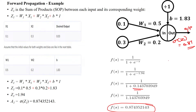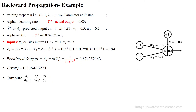Now we have to calculate the error, also called loss or cost. The actual output given in the dataset is 0.03 and the predicted output is 0.87. When we calculate the error, we get 0.3564.